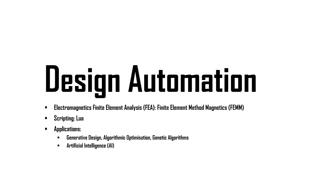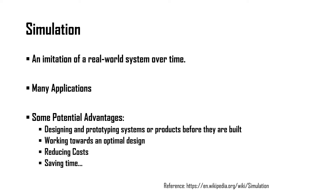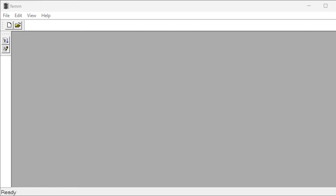These methods can also lay the foundations for further development in artificial intelligence. Simulation is an imitation of a real-world system over time and can have many applications. In the context of this tutorial, some of the potential advantages for electromagnetic simulations include designing and prototyping systems or products before they're built, working towards an optimal design, reducing costs, and saving time.